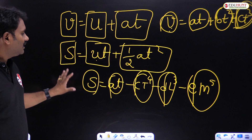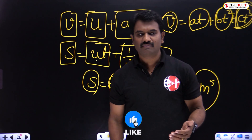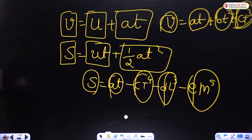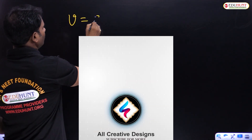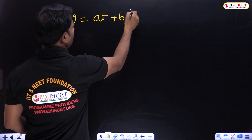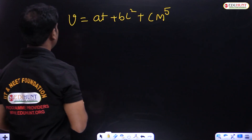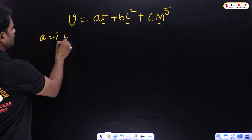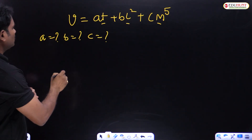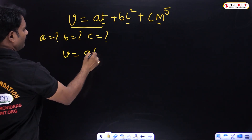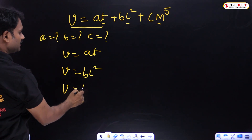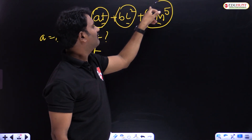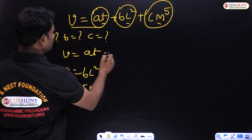For example, if velocity v equals at plus bl squared plus cm to the power 5, where v is velocity, t is time, l is length, and m is mass — then a, b, and c are unknown constants. Since v equals at, and v equals bl squared, and v equals cm to the power 5, all three terms must equal velocity. So velocity plus velocity plus velocity equals velocity.